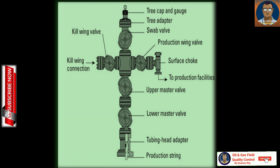Third: Production Wing Valve. This valve controls the flow of oil and gas from the well to the production facilities. It can be opened or closed to start and stop production. It is also used to regulate the flow rate to optimize production and manage potential issues like sand production.